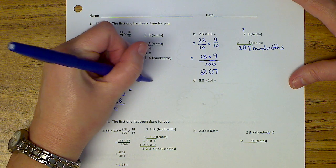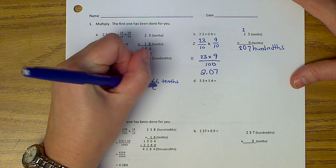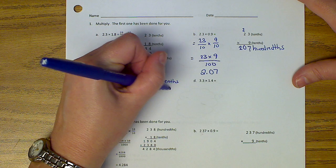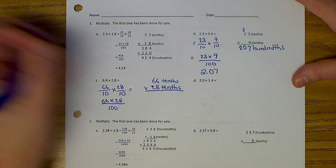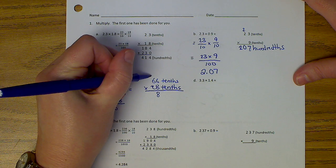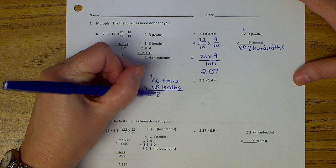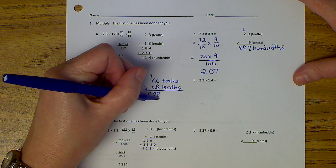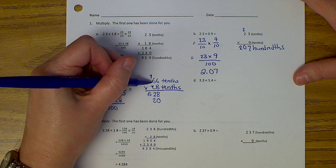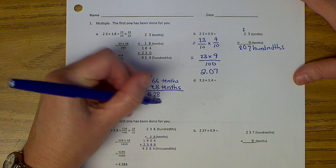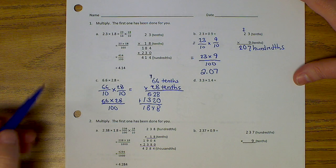Okay, we can also solve it this way. Sixty-six tenths times twenty-eight tenths. Six times eight. Forty-eight. Carry my four. Six times eight again is forty-eight. Forty-eight plus four is fifty-two. What do I do down here? Add a zero. Two times six is twelve. Two times six is twelve. Plus one? Thirteen.